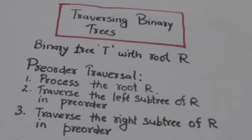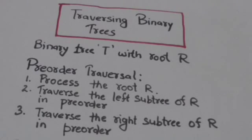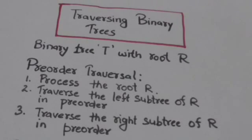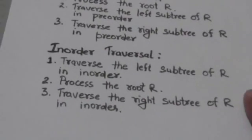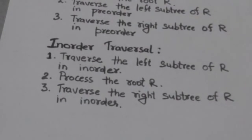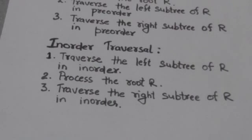In pre-order traversal of binary tree T whose root is R, first root R is processed, then the left subtree of root R is traversed in pre-order, and after this the right subtree of root R is traversed in pre-order.